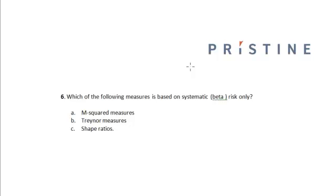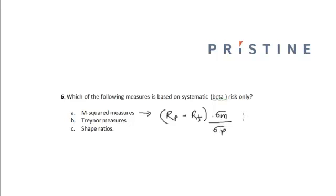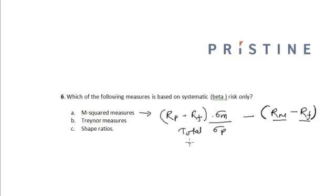Which of the following measures is based on systematic beta risk only? The M-squared measure is defined as the expected return of the portfolio over the risk-free rate, multiplied by the standard deviation of the whole market divided by the standard deviation of the portfolio, minus the return of the market minus the risk-free rate. So M-squared is based on the total risk.